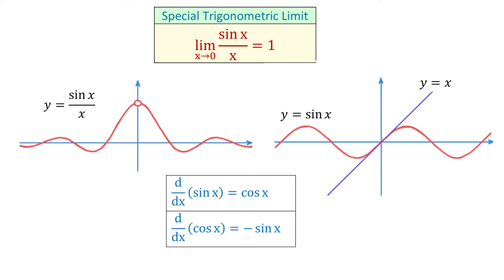Now let's see how we can prove that the limit of sin(x) over x as x approaches 0 equals 1. First, notice that we cannot use direct substitution because replacing x with 0 will cause both the numerator and the denominator to become 0. Instead, in this video I will show you how to use geometry to prove this limit.